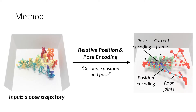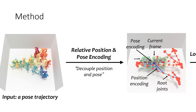Specifically, given a pose trajectory observation, we first extract meaningful features from the human pose sequence with a position encoder. This disentangles each observed frame into a relative position encoding and a position-agnostic pose. We then use a pose encoder to learn local spatiotemporal features for each pose in the trajectory sequence.